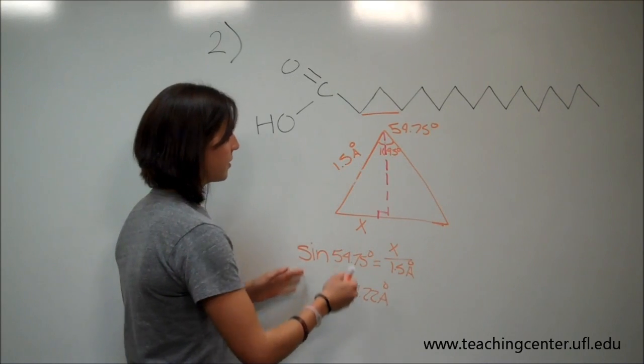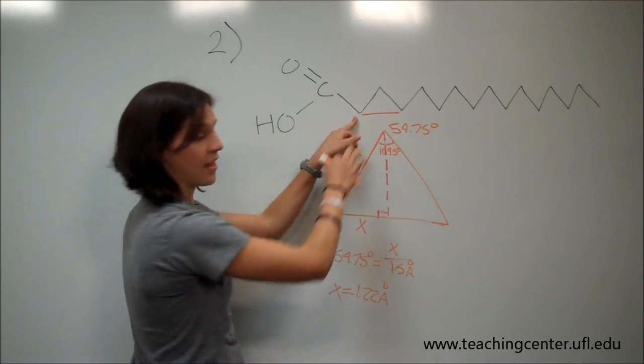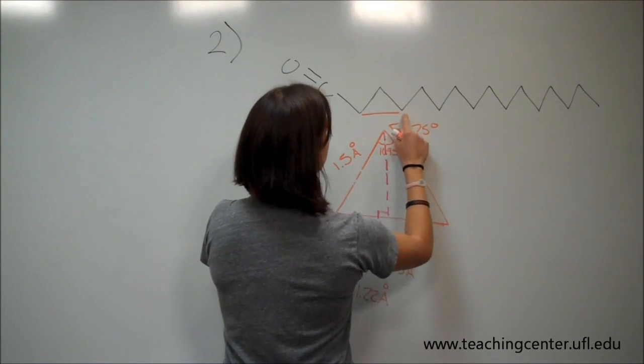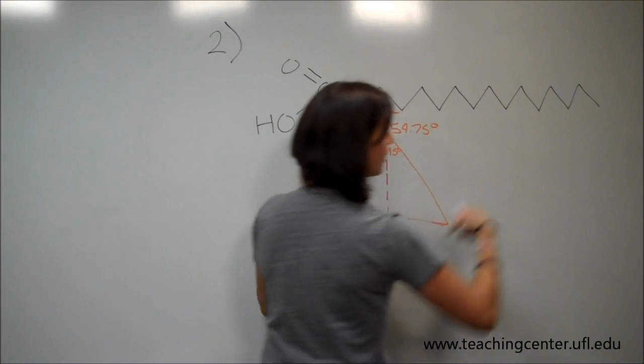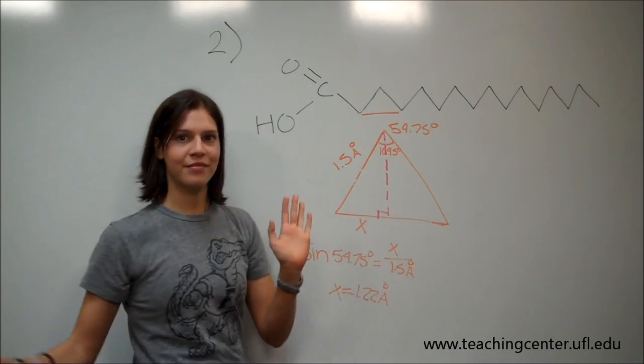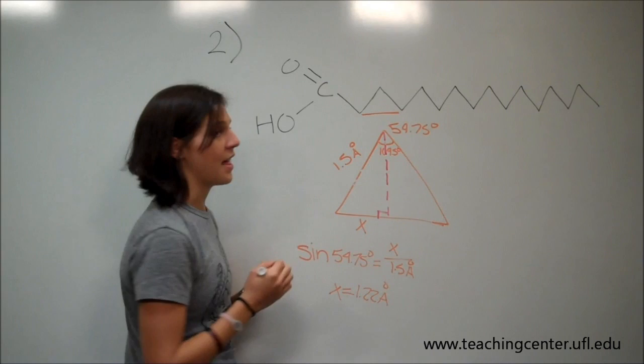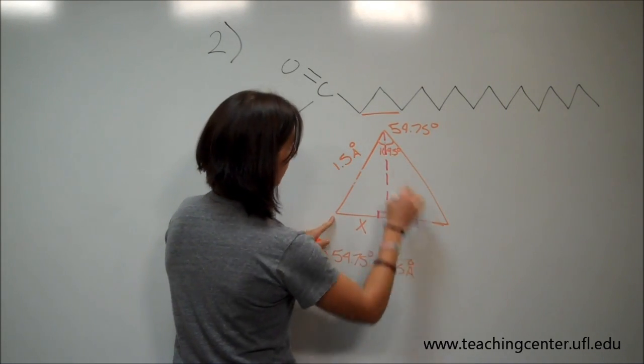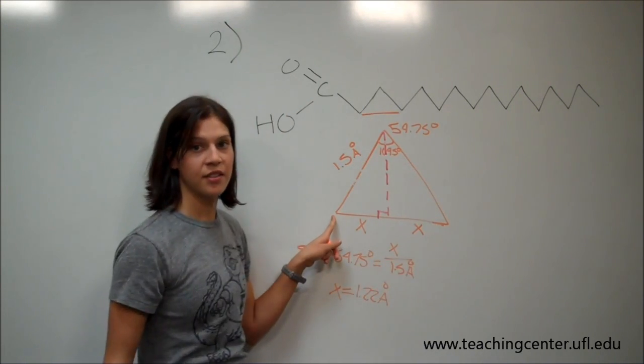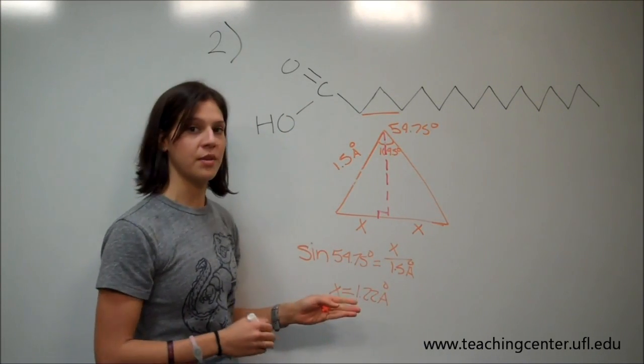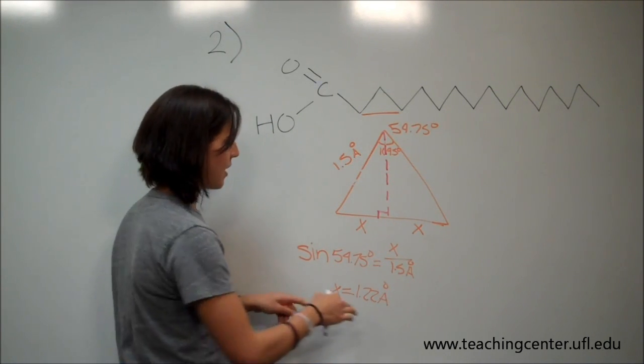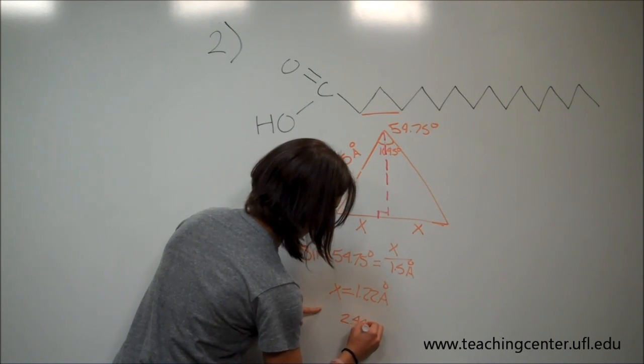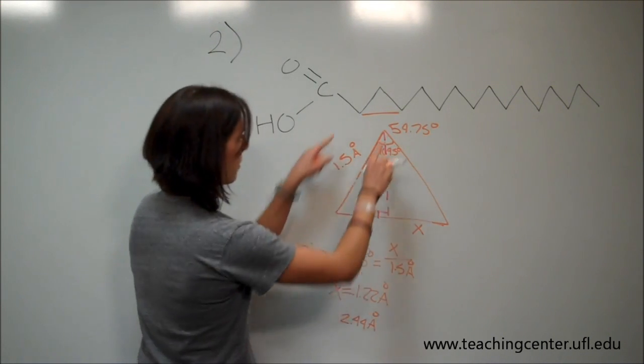So once we have this distance, we're going to multiply this by the number of these that we find in our fatty acids. So we have 1, 2, 3, 4, 5, 6, 7, 8. And we're actually going to multiply that by 2 because we only used, this is the distance here, but this whole distance is actually 2X. So before I even go into multiplying it by 8, I'm going to multiply this by 2. And we're going to get 2.44 angstroms for this distance.